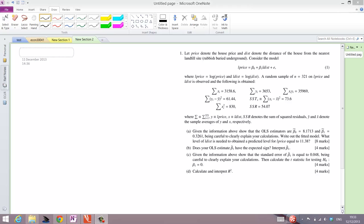Consider the model L price equals beta 0 plus beta 1 L dist plus some error term E, where L price is the log of price and L dist is the log of dist.